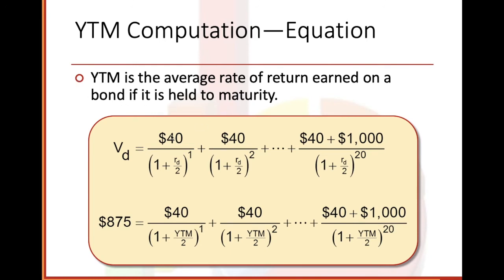For yield to maturity, since it's semi-annual we divide by two: V_D = $875, payment = $40, going all the way to period 20 because 10 years times 2 equals 20. Our yield to maturity rate is also divided by 2. On a calculator: N = 20, present value = negative $875, payment = $40, future value = $1,000. We're trying to calculate the interest rate at the time we first invested.